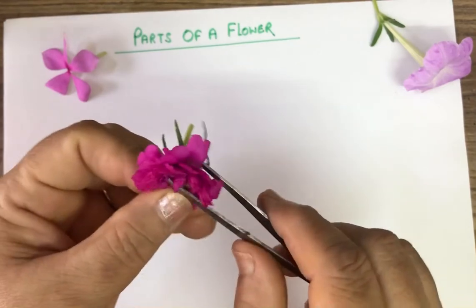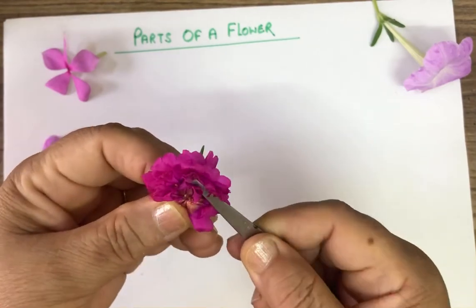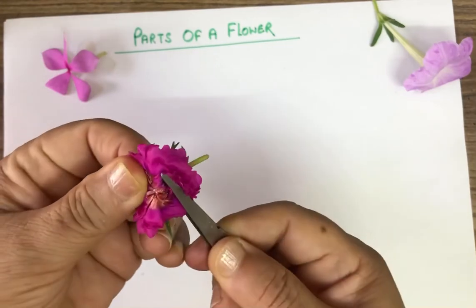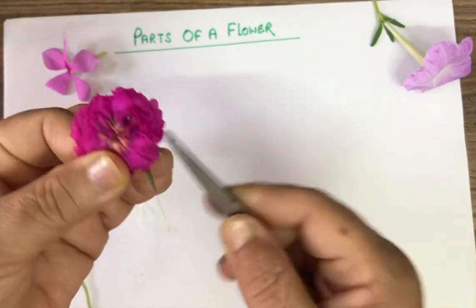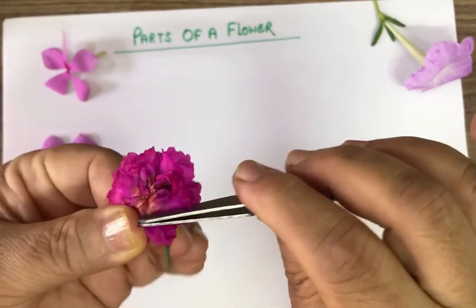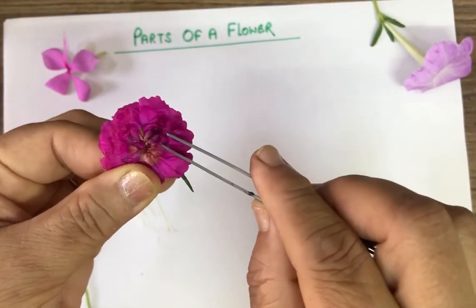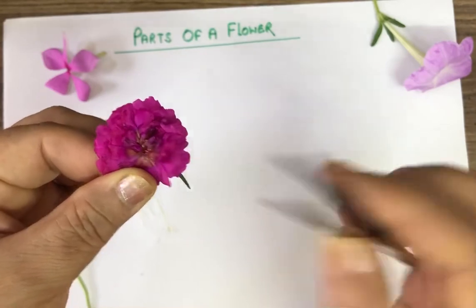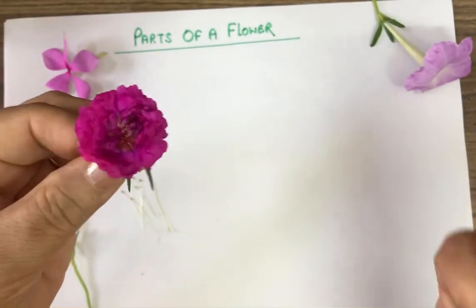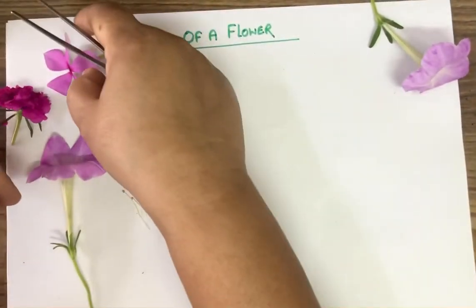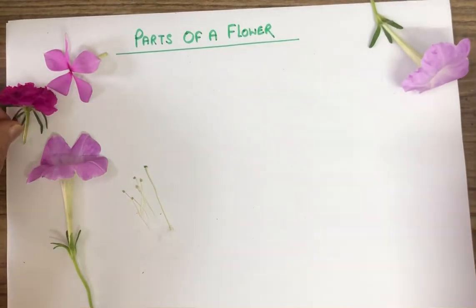Now you can see the male and the female part — there are so many male parts and one female in the center. We will study only one flower. In the same way, all other flowers have these parts.